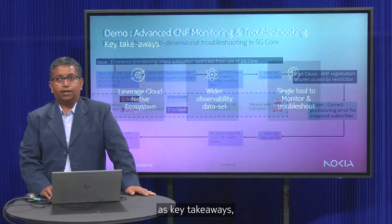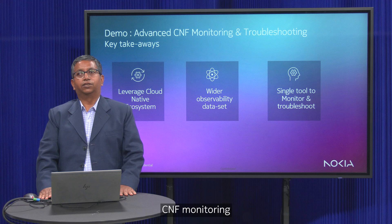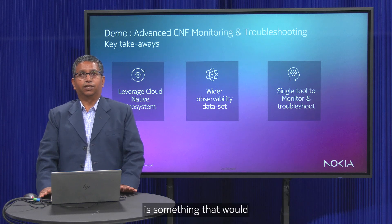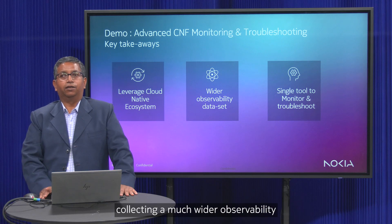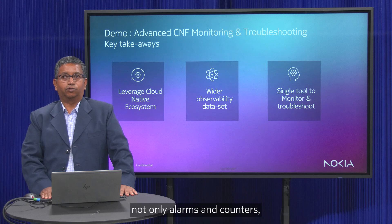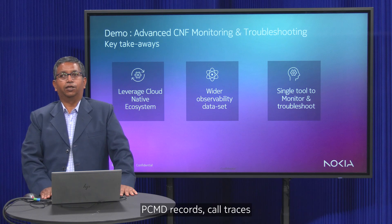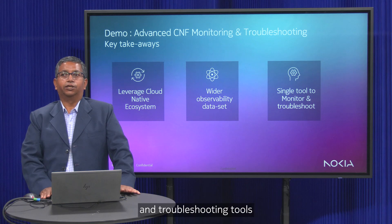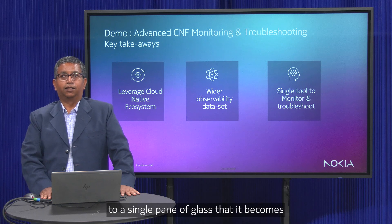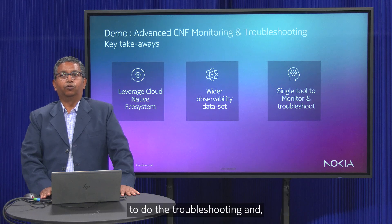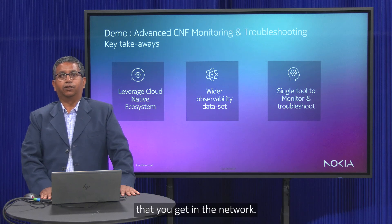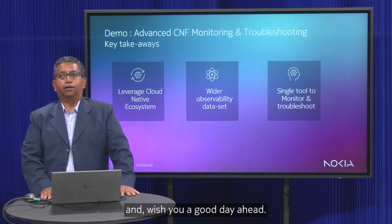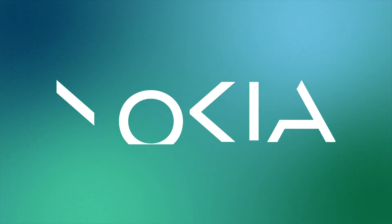As takeaways, this Advanced CNF Monitoring and Troubleshooting adds value by leveraging the cloud native ecosystem and collecting a much wider observability dataset — not only alarms and counters, but also logs, health check records, PCMD records, and call traces — bringing all these monitoring and troubleshooting tools to a single pane of glass. This makes troubleshooting much easier and reduces mean time to repair for any faults in the network. Thank you very much for listening and have a good day ahead.